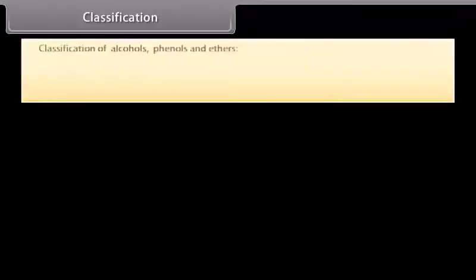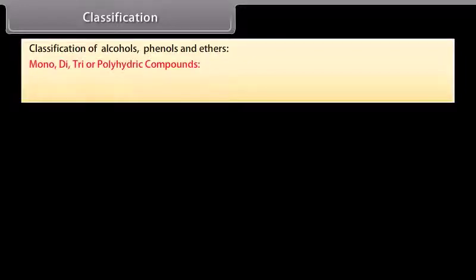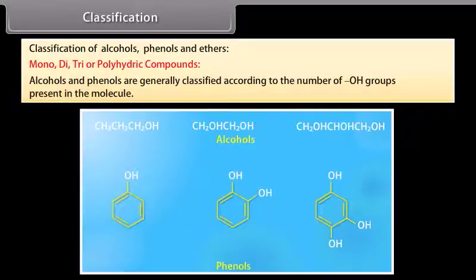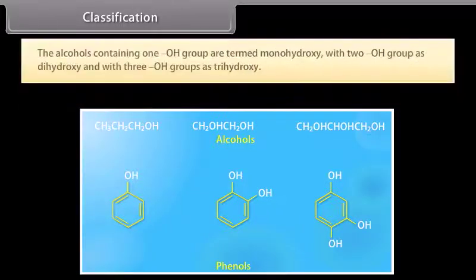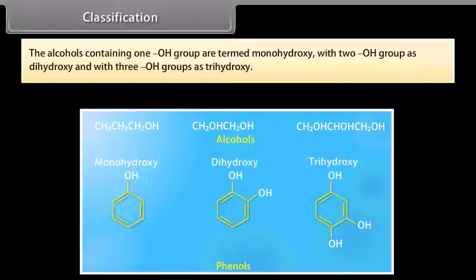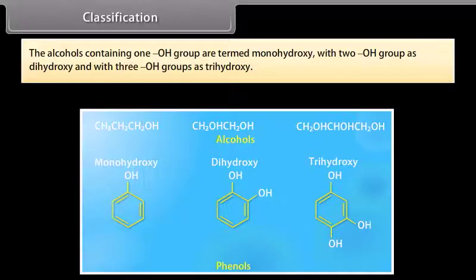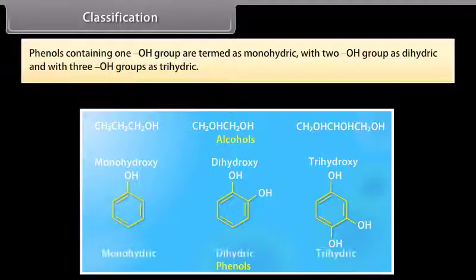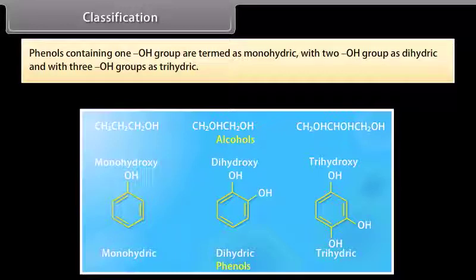Classification of alcohols, phenols and ethers — mono, di, tri or polyhydric compounds. Alcohols and phenols are generally classified according to the number of hydroxyl groups present in the molecule. Alcohols containing one hydroxyl group are termed monohydroxy, with two hydroxyl groups as dihydroxy, and with three hydroxyl groups as trihydroxy. Phenols containing one hydroxyl group are termed monohydric, with two as dihydric, and with three as trihydric.